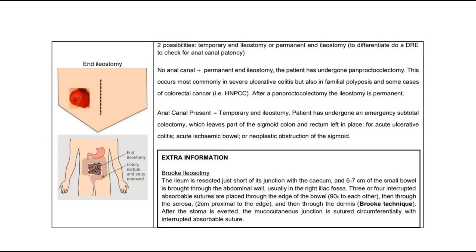For end ileostomy, there are two possibilities — temporary or permanent. Perform a digital rectal exam to differentiate. If there is no anal canal, it is a permanent end ileostomy, and the patient has undergone panproctocolectomy, which occurs most commonly in severe ulcerative colitis, but also in familial polyposis and some cases of colorectal cancer like HNPCC. After panproctocolectomy, the ileostomy is permanent. If the anal canal is present, it is a temporary end ileostomy, and the patient has undergone an emergency subtotal colectomy, which leaves part of the sigmoid colon and rectum in place, for conditions such as acute ulcerative colitis, acute ischemic bowel, or neoplastic obstruction of the sigmoid.